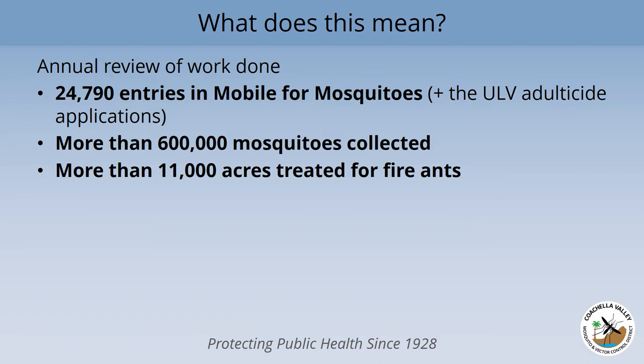As far as the surveillance group, they collected more than 600,000 mosquitoes and brought those out of the environment. You can think that those mosquitoes could be a food source for other animals. We also treated more than 11,000 acres for fire ants. These are kind of routine numbers for us — pretty in line with previous years. So you can see that year on year, all the work that we do together can have this impact on the environment.